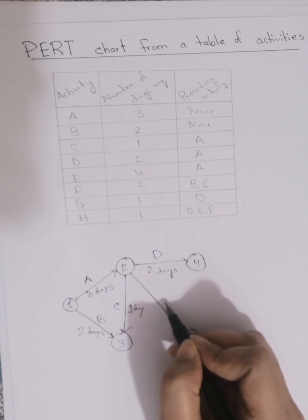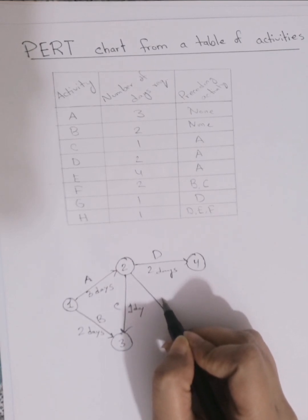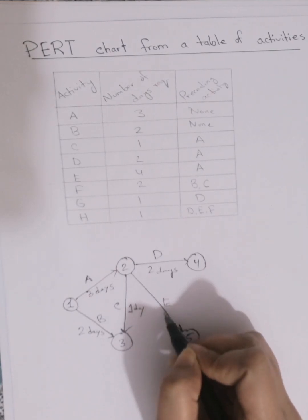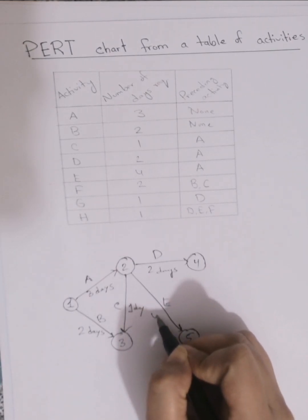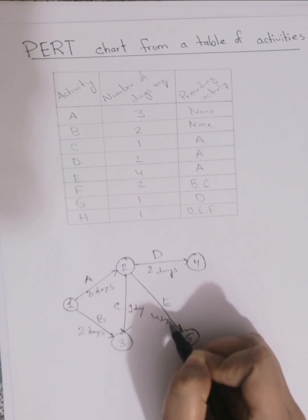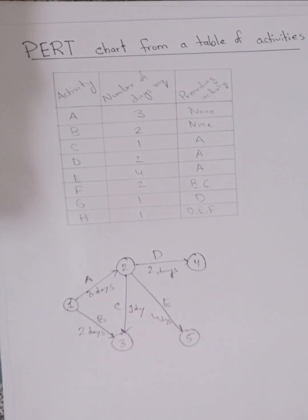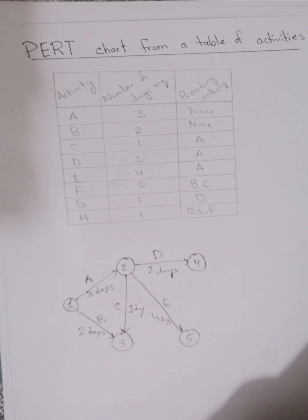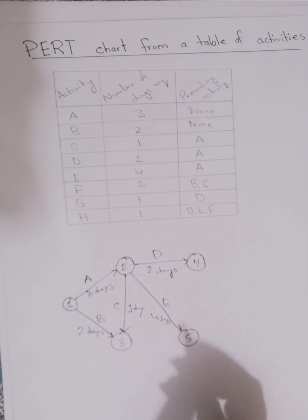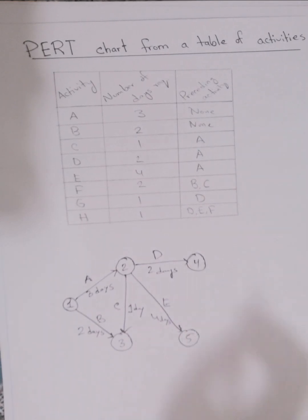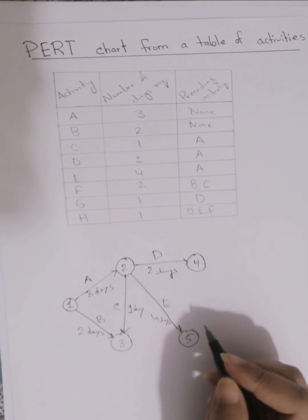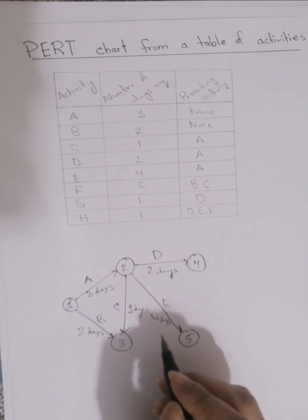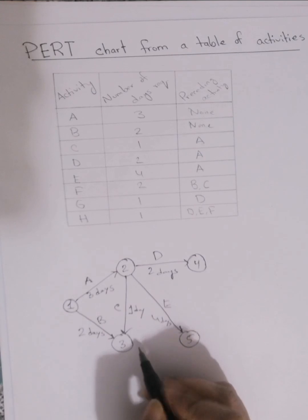Here is activity D and here is activity E. Then we can assign arrows for activities F and G.